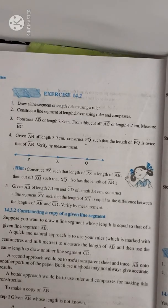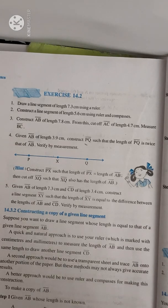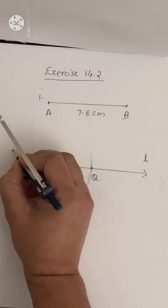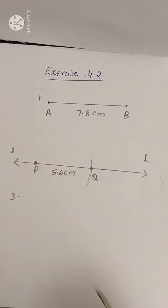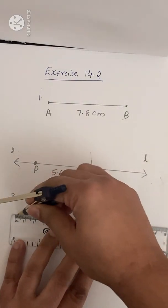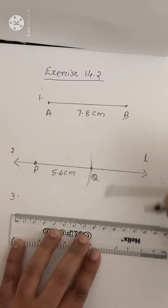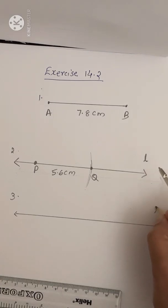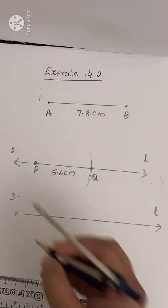Next we will do question number 3: Construct AB of length 7.8 cm. From this, cut off AC of length 4.7 cm. Measure BC. First what you have to do is draw a line L and draw two arrows at the ends to show that it is a line.